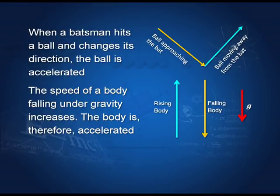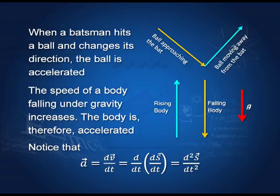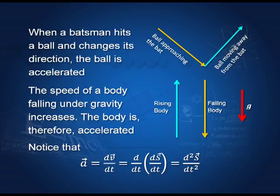Consider a body falling under gravity — its speed increases but its direction does not change; it falls vertically downwards. In this case it is the magnitude of velocity that is changing, not the direction. A change in magnitude or a change in direction both mean the motion is accelerated. So a body falling vertically downwards or going up vertically — in both cases the motion is accelerated. The acceleration is the acceleration due to gravity. And since acceleration is dv/dt, which is d/dt of ds/dt, it equals d²s/dt² — differentiating the displacement vector twice with respect to time gives the acceleration.